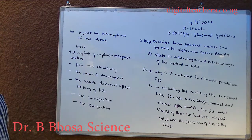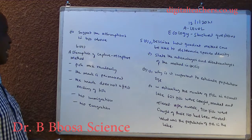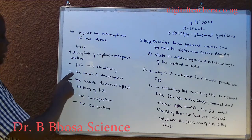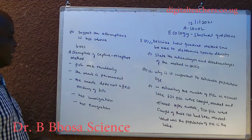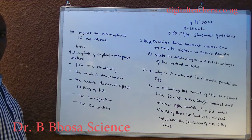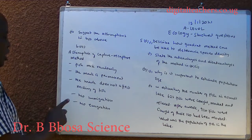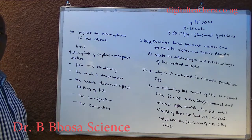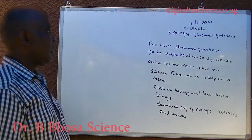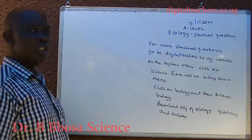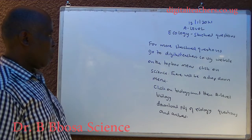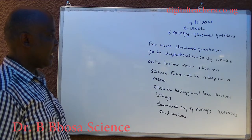B, part three. Assumptions of the capture-recapture method: the mark is permanent, the mark does not affect the behavior or mixing of fish, no emigration, no immigration, and no births or deaths between sampling periods.